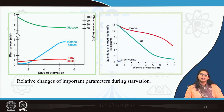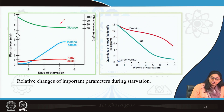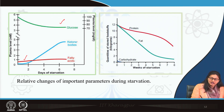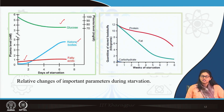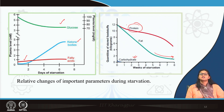These are the relative changes during starvation — when starvation starts, blood glucose is the first to fall. Initially glycogen is utilized; when glycogen is depleted, fatty acid utilization begins and eventually ketone body synthesis starts. Looking at storage levels: carbohydrate is completely depleted first, then fat breakdown begins, and when fat decreases, protein breakdown starts — amino acids supply energy to the cell.